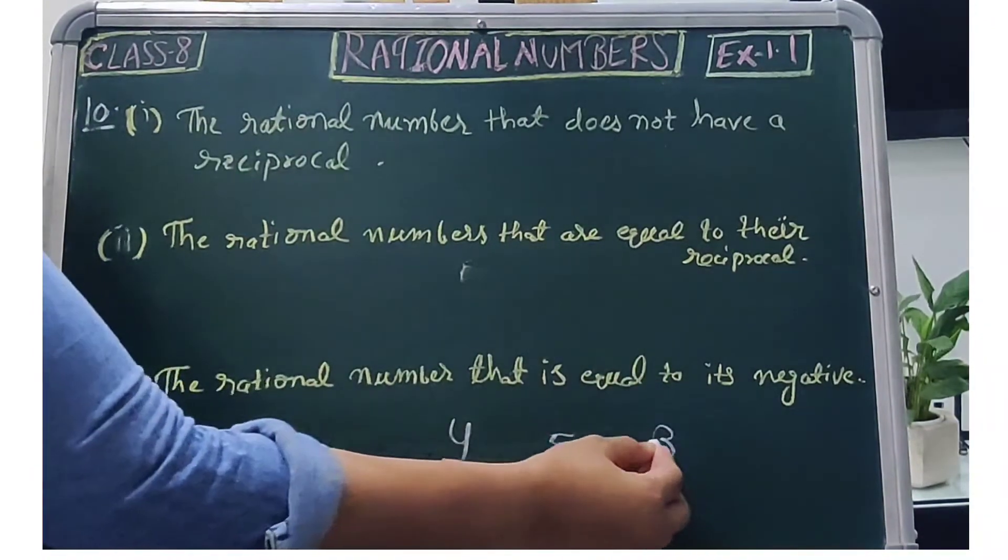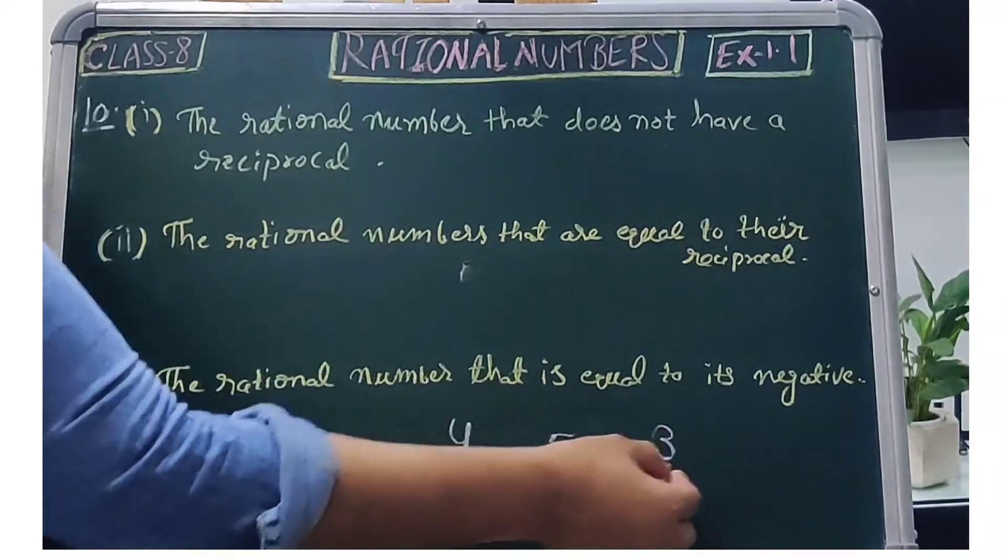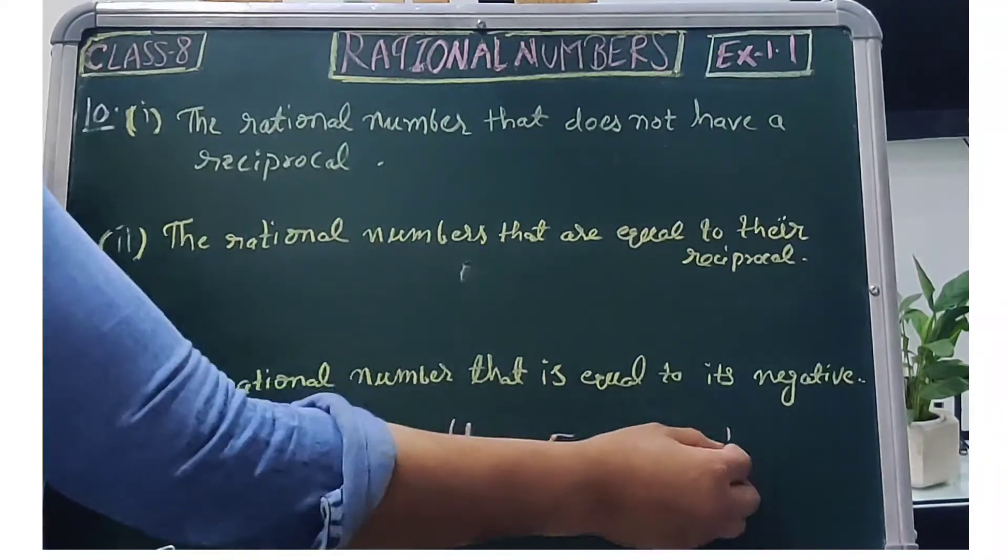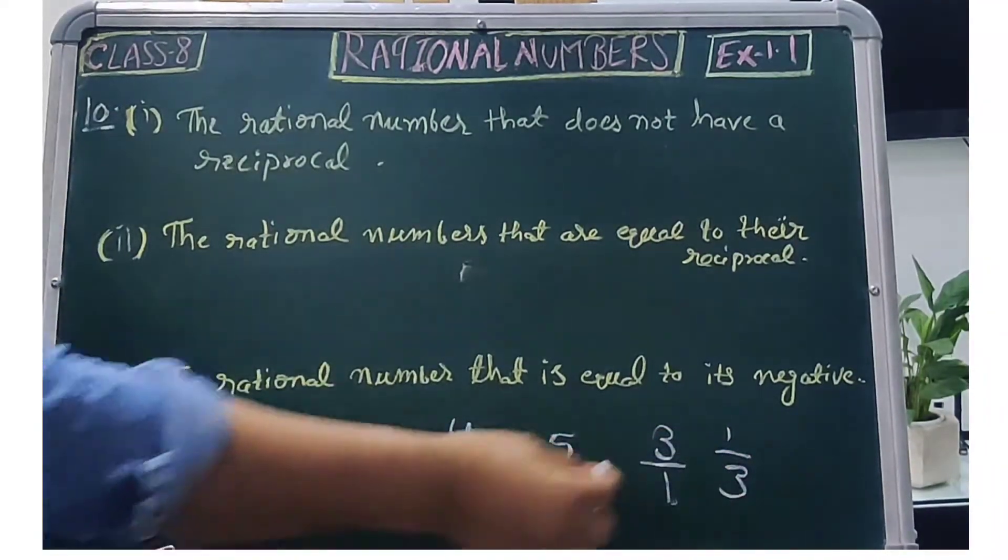Okay, if your number is 3, we will write it in 3 by 1. The reciprocal is 1 by 3. Got it?